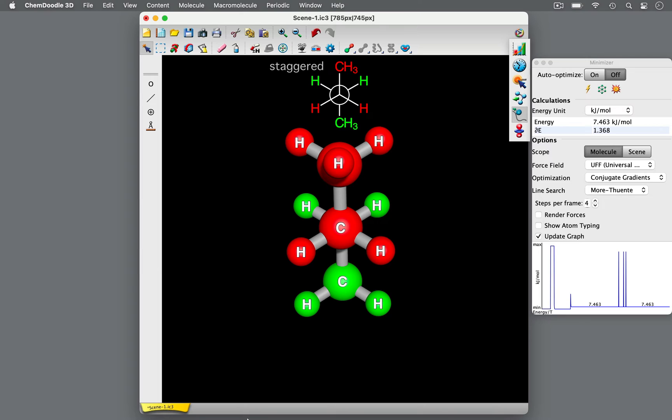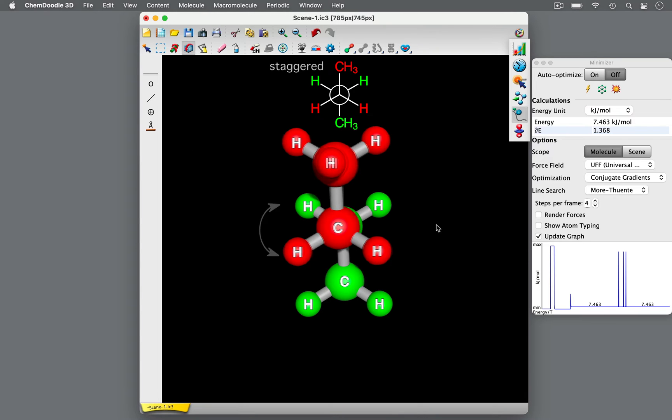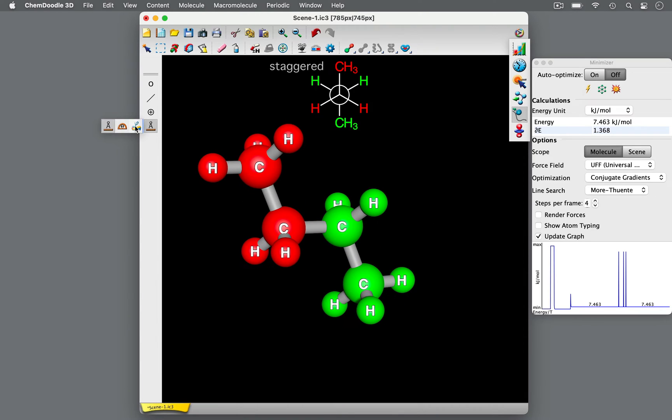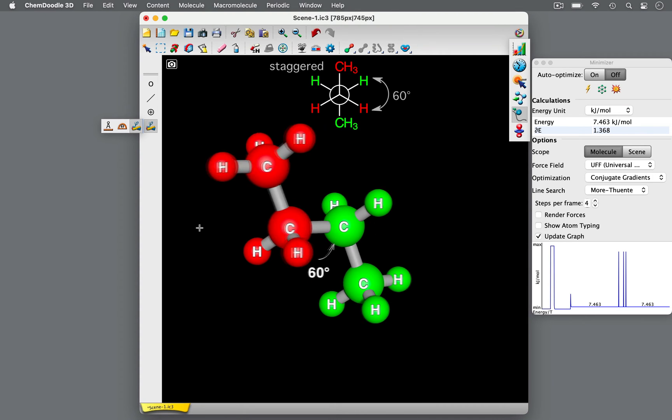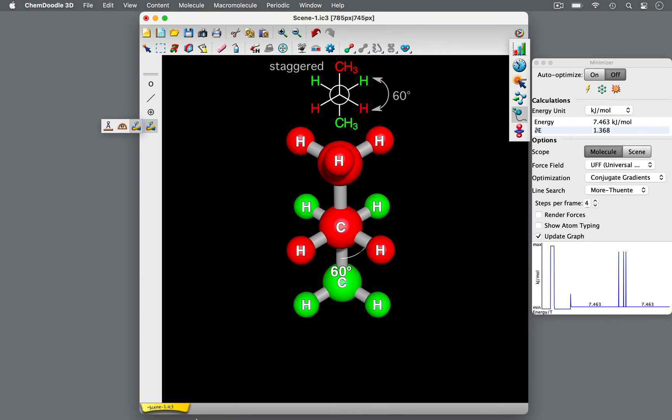This is a staggered conformer of butane. Staggered conformations maximize the distance between the bonds in the front and the bonds in the back, such that the dihedral angle, or the angle between two bonds on neighboring atoms, is 60 degrees. As such, staggered conformations have lower energy.